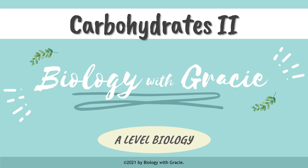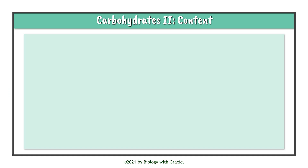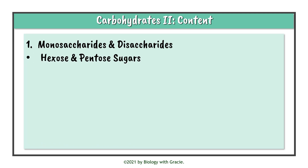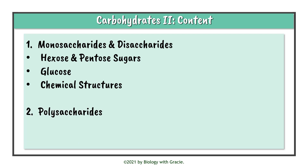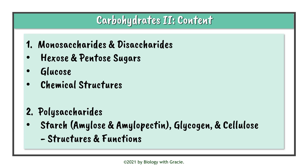Hello everybody and welcome back to Biology with Gracie. Today's video is my second video on carbohydrates for A-level biology. The content we're going to be covering is monosaccharides and disaccharides, specifically hexose and pentose sugars, glucose, and chemical structures of monosaccharides and disaccharides. We're then going to talk about polysaccharides — in particular starch, which is made up of amylose and amylopectin, glycogen, and cellulose, discussing their structures and functions.